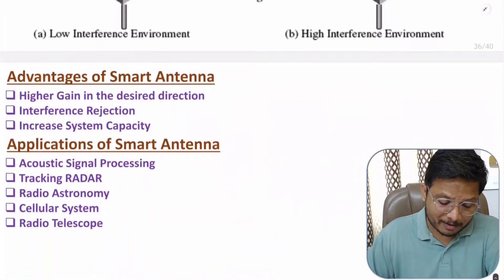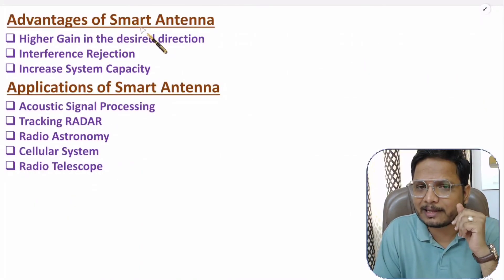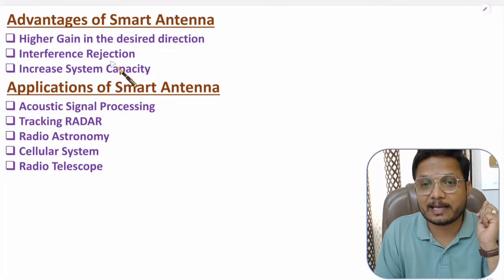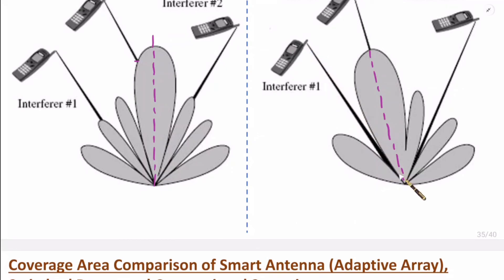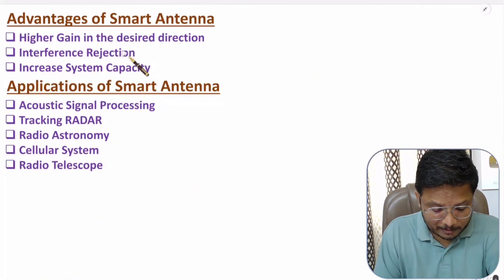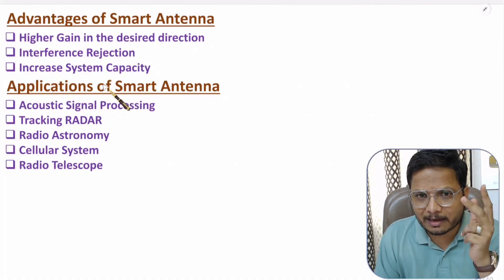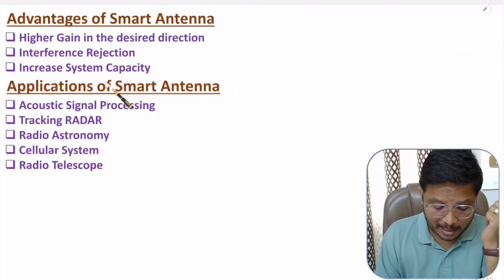Now I'll discuss advantages and applications of smart antenna. Smart antenna radiates in the desired direction only based on direction of arrival, so it has higher gain in that desired direction. It also provides interference rejection — as shown in the diagram, we have nulls in the directions of interferers, so smart antenna receives minimum signals from interferers. Increased system capacity is also an advantage, because radiation happens only in the desired direction, and smart antenna focuses towards users only, giving higher system capacity.